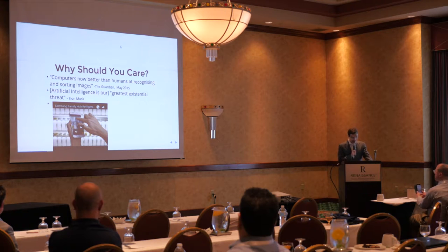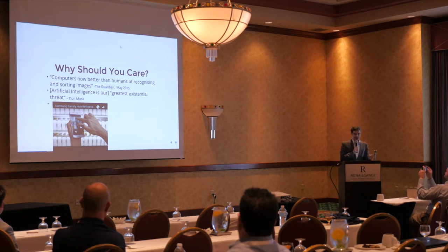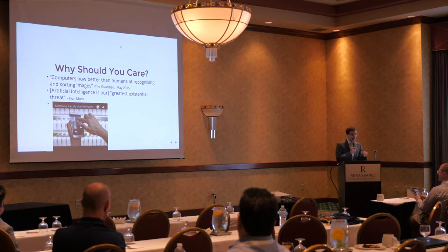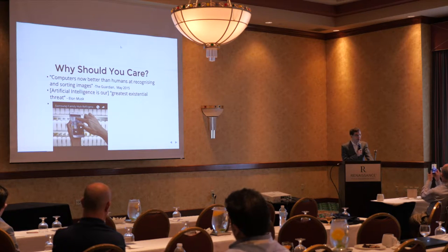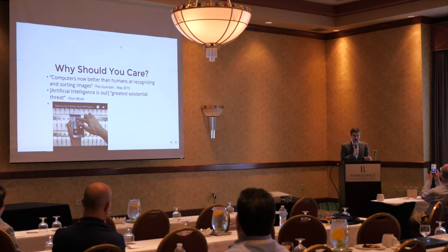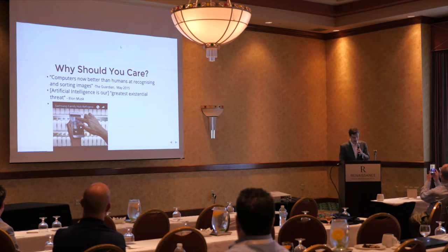There's a quote from the media that says computers are now better than humans at recognizing and sorting images. This is a half-truth — humans can still do creative things like read and bring in outside knowledge, but we as humans wouldn't want to spend our entire lives classifying things, whereas a computer does not mind. Elon Musk quips that artificial intelligence is our greatest existential threat, and deep learning is a big part of AI. And lastly, there are very real commercial applications for this.